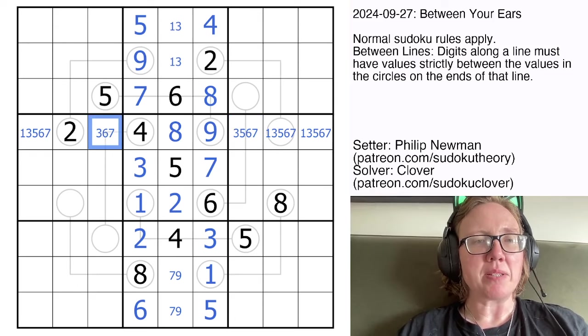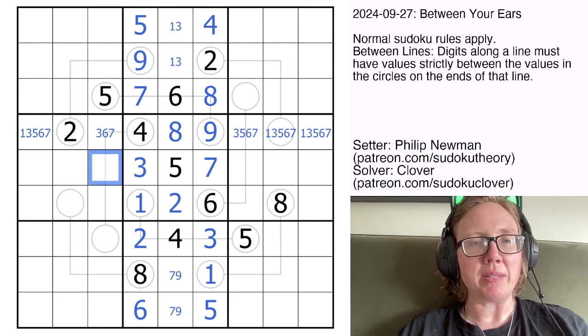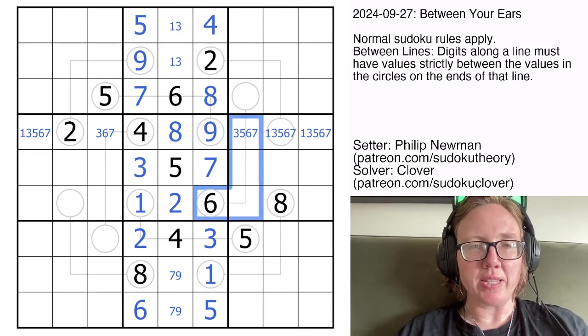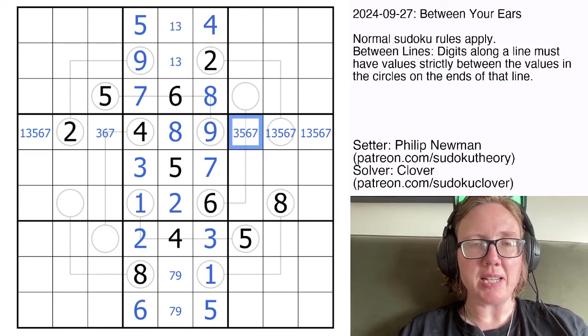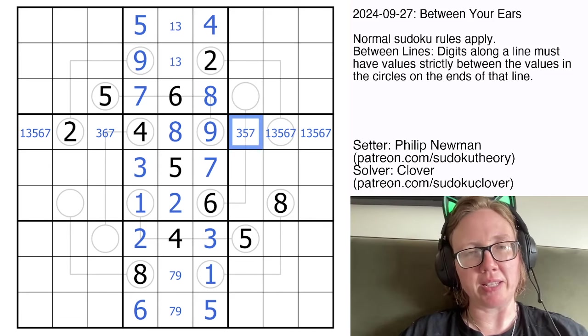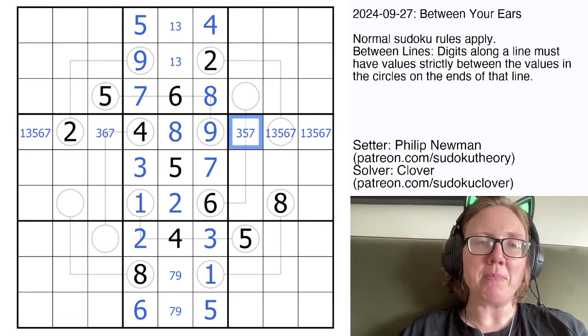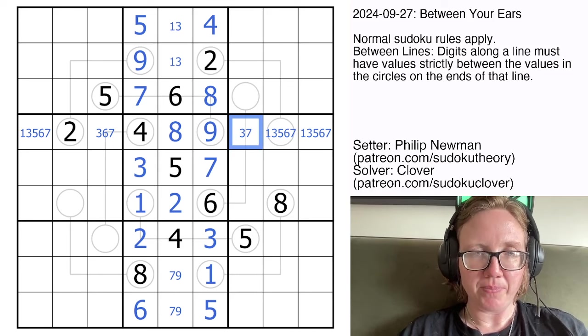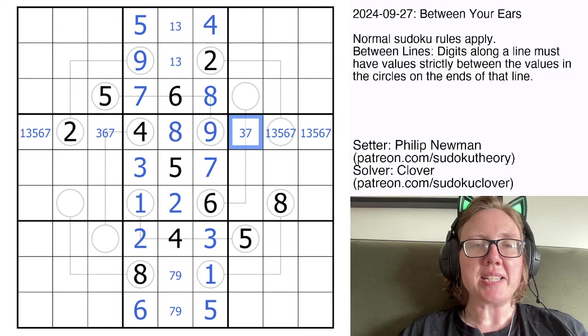This can't be a 5 by Sudoku, so we're going to eliminate 5 from that cell. And if we turn our attention to this, this can't be a 6 because there's already a 6 on one end, so 6 is definitely not going to be in between 7 and whatever the other value is. This also can't be a 5 because there's a 5 in the column.